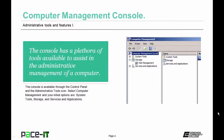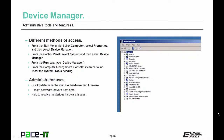Now let's talk about Device Manager. From the Start menu, right-click Computer and select Properties, then Device Manager. Or right-click Computer and select Manage. From the Control Panel, select System then Device Manager. From a run or search box, type 'device manager'. Or access it from the Computer Management console under System Tools. Device Manager allows the administrator to quickly determine the status of hardware and firmware, update hardware drivers easily, and help resolve mysterious hardware issues.